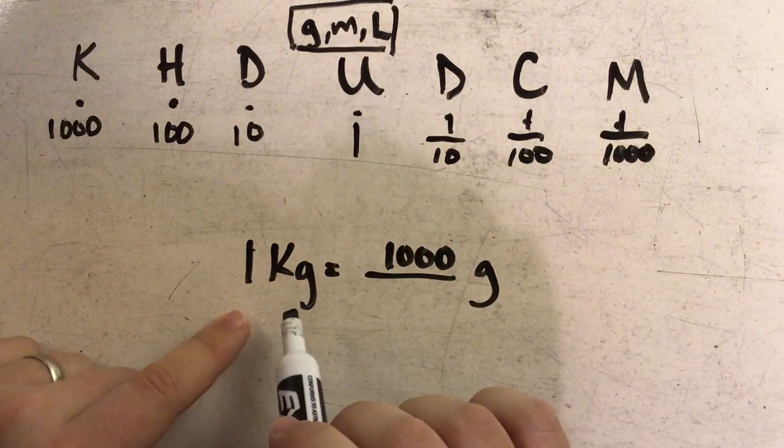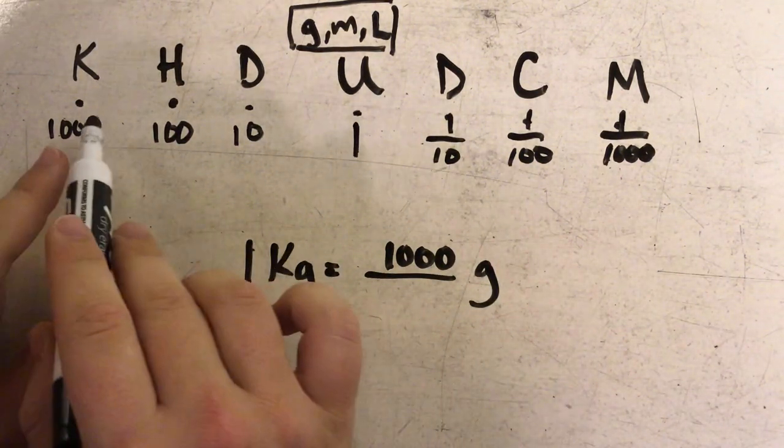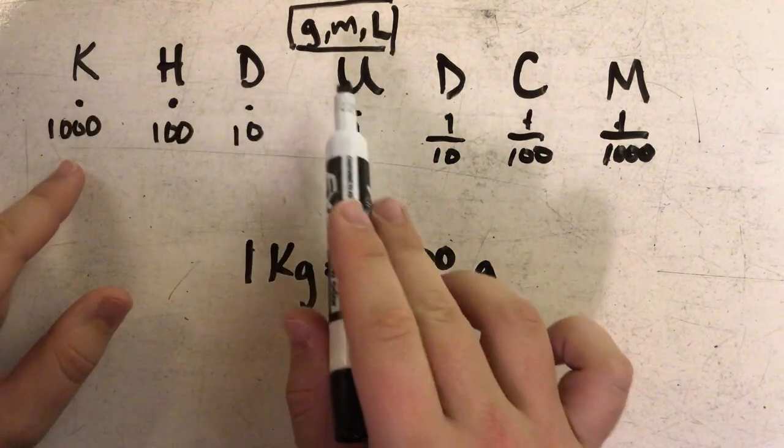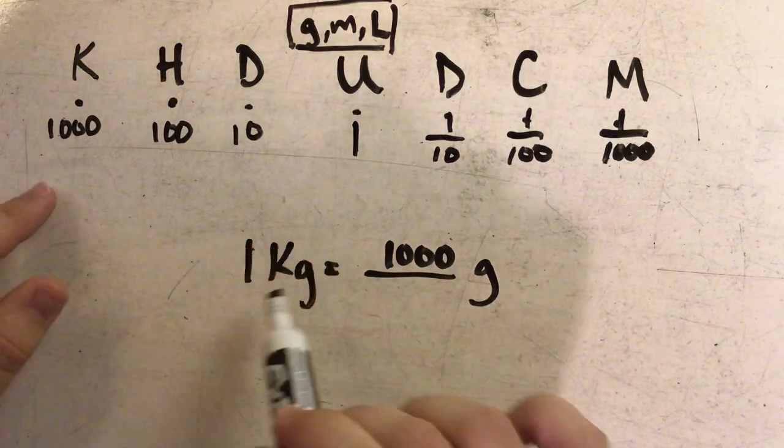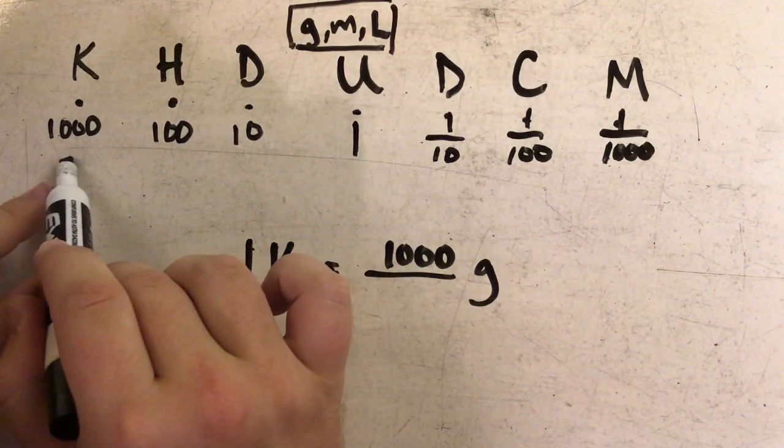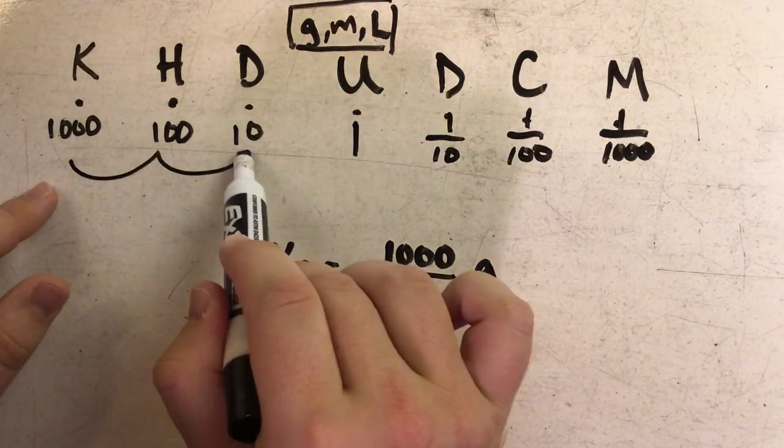Well, I really just had to move my decimal points the same number of times that I had to move up here to get from kilograms to grams. If I look, I was given kilograms, so I start in K and I move one, two, three spaces to get to my grams unit, which was my basic unit.